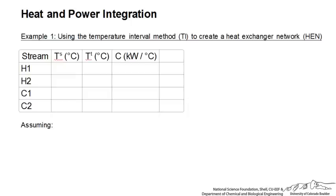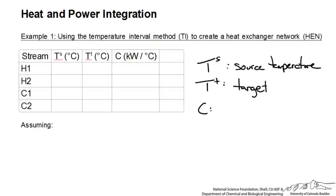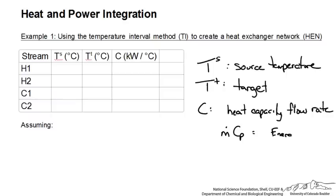The first step is to create a table for our streams. TS stands for our source temperature, which is really our inlet, and TT stands for our target temperature. C is our heat capacity flow rate — that is the flow rate times a specific heat — and the units on this are energy per temperature, which accounts for the mass flow rates of each stream.